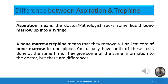The basic difference between aspiration and trephine biopsy is that in aspiration, the doctor, pathologist, or hematologist sucks some liquid bone marrow into a syringe using special needles like Salah, Islam, or Jamshidi needles. In trephine biopsy, they remove a one to two centimeter core of bone marrow in one piece. Both tests are usually done at the same time — first the aspirate, then the piece of bone. Aspiration yields a liquid portion; biopsy yields a piece of bone marrow.